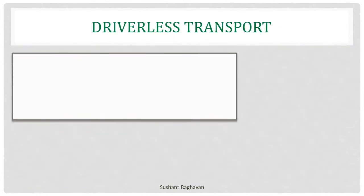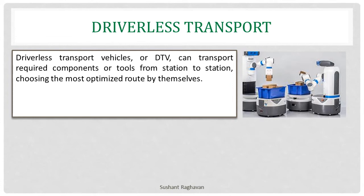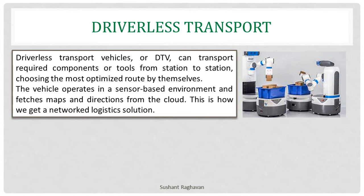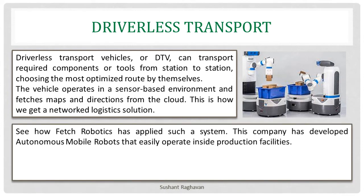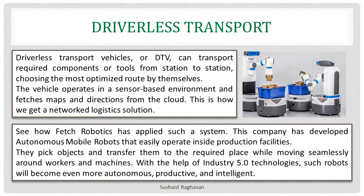Another smart factory solution is driverless transport. Driverless transport vehicles, or DTVs, can support required components or tools from station to station, choosing the most optimized route by themselves. The vehicle operates in a sensor-based environment and fetches maps and directions from the cloud, creating a network logistics solution. Fetch Logistics has applied such a system, developing autonomous mobile robots that easily operate inside production facilities — picking objects and transferring them to the required place while moving seamlessly around workers and machines. With Industry 5.0 technologies, such robots will become even more autonomous, productive and intelligent.